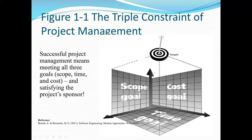This diagram shows the three primary constraints of any project: scope, cost, and time. The scope goal must have a boundary. If the scope increases and we have scope creep, it affects the costs — costs may go high — and it affects the time — it may take longer to complete. Successful project management means meeting all three goals: scope, time, and cost, while also satisfying the project sponsor.